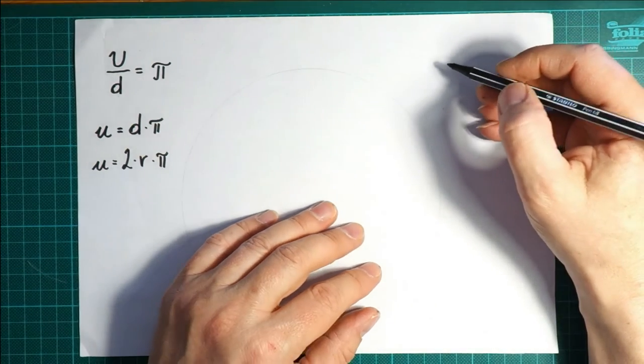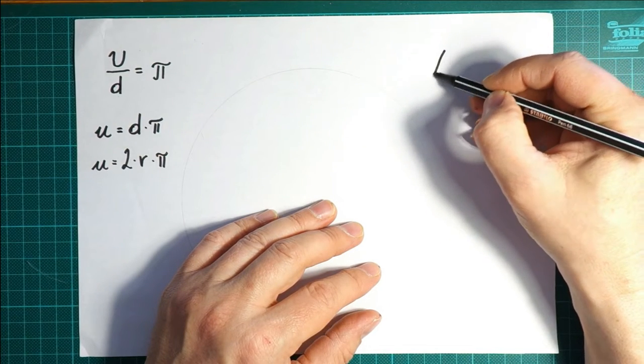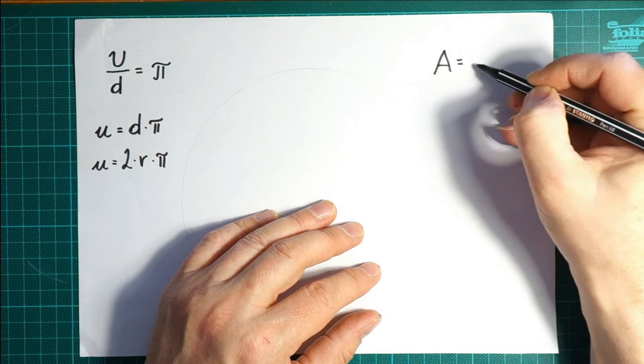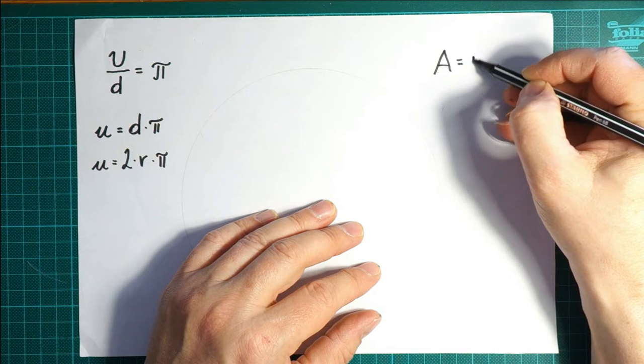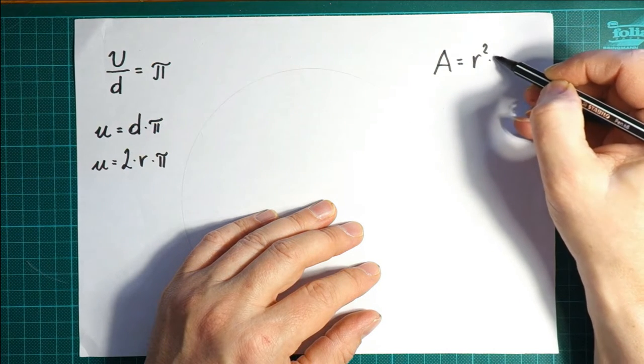And that's what we looked at last time and found that the area of a circle is r² mal π.